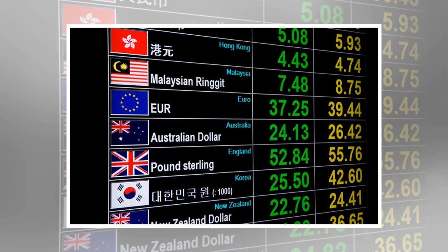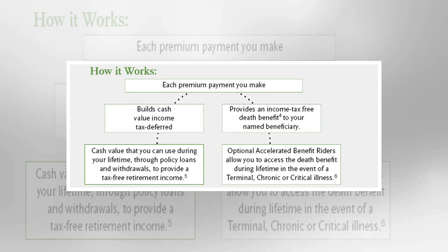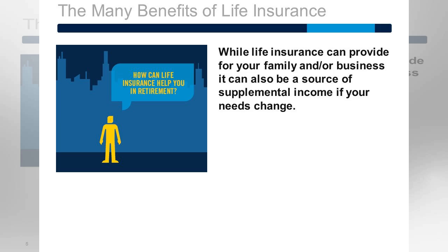Second, the interest rate that an insurance company pays is typically much higher than the interest rate that a bank will pay on a savings account. For example, at the time of this article, the national average interest rate on a bank savings account is 0.06%, whereas universal life policies typically average around 3% to 5%. The biggest difference between cash value and a bank savings account has to do with taking the money out.